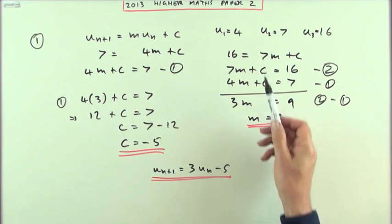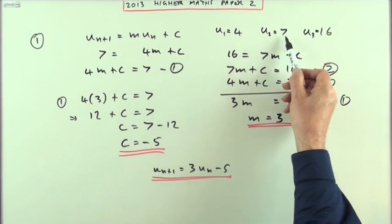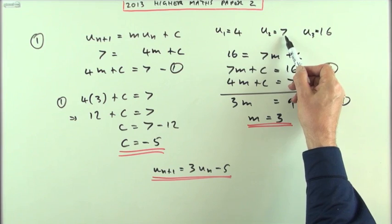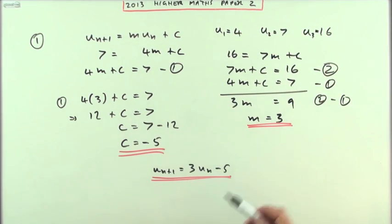You can check if that's correct just by rattling through those. Here's the rule: times 3 take away 5. 3 times 4 is 12, take away 5 is 7. 3 times 7 is 21, take away 5 is 16. You know you've got it right.